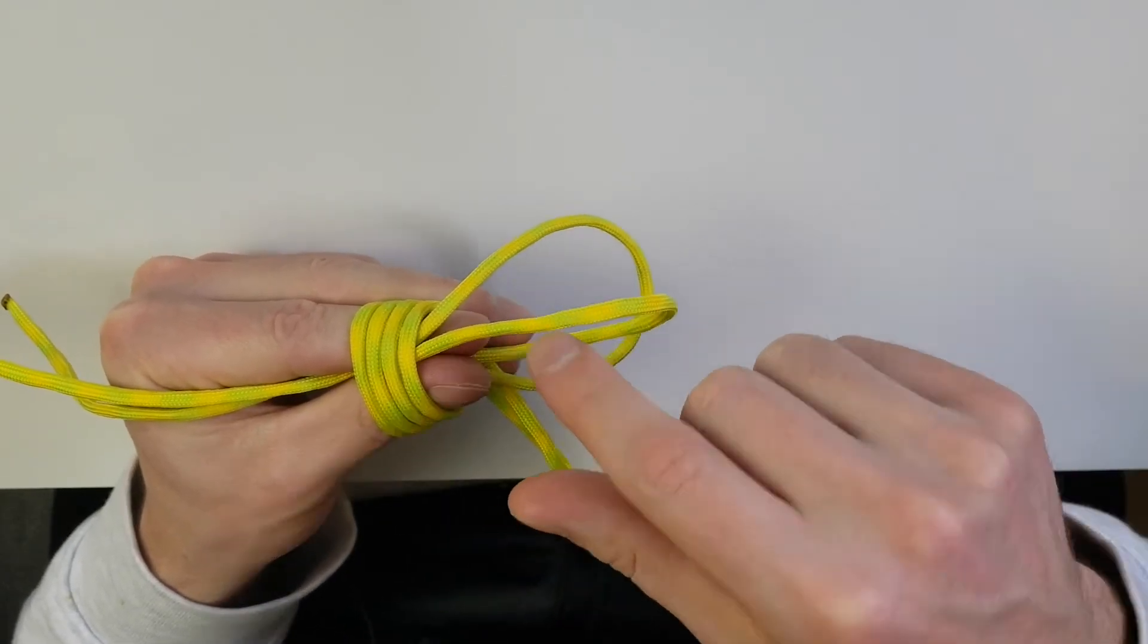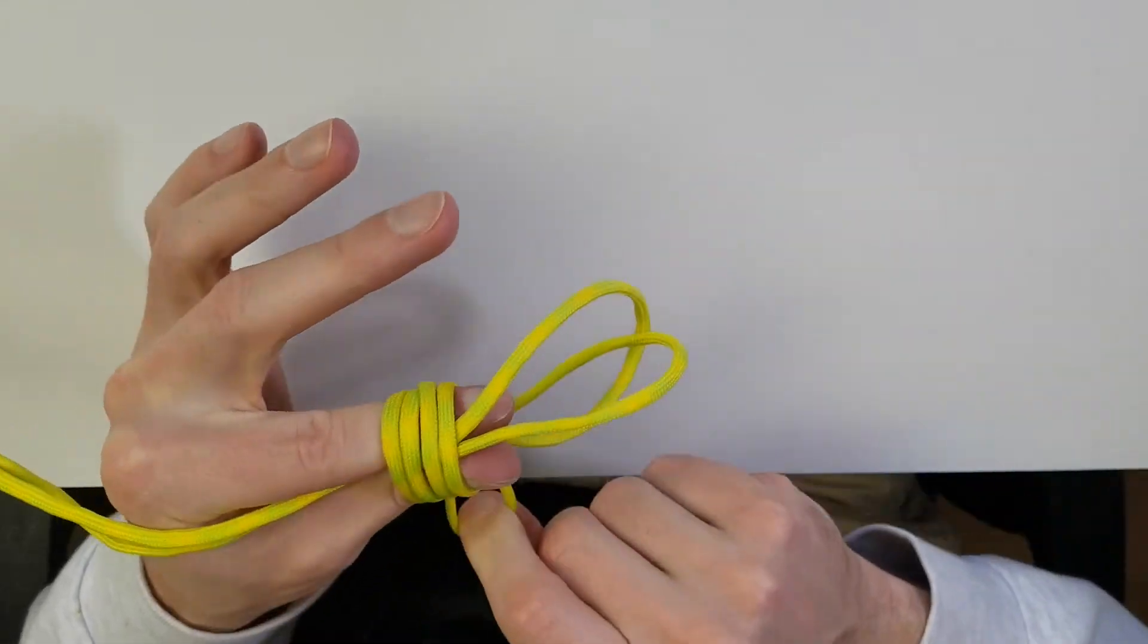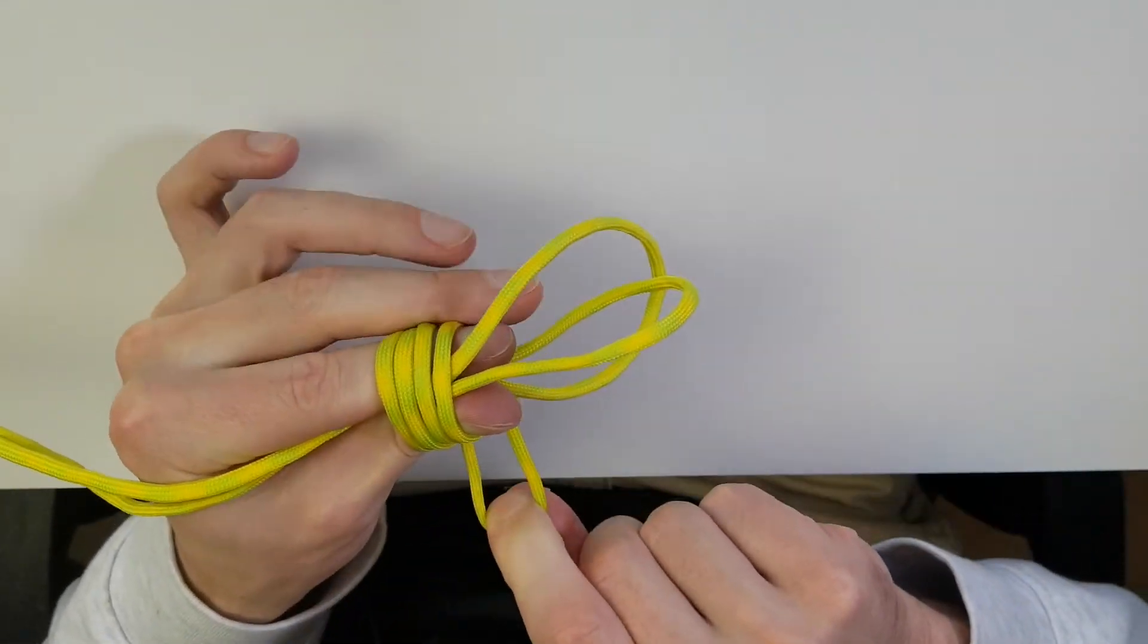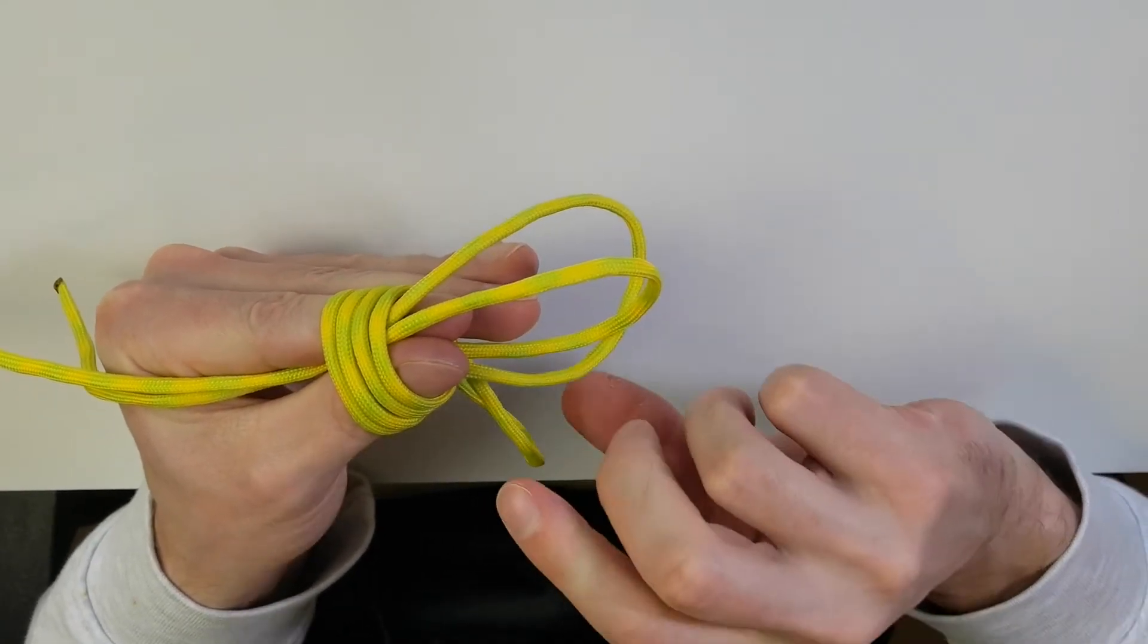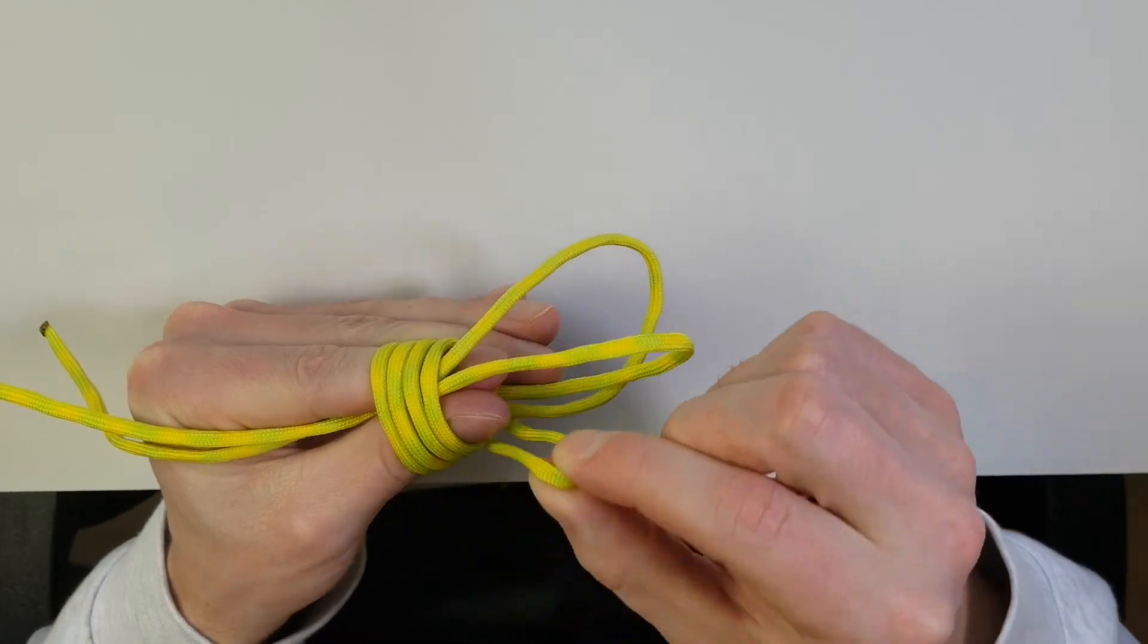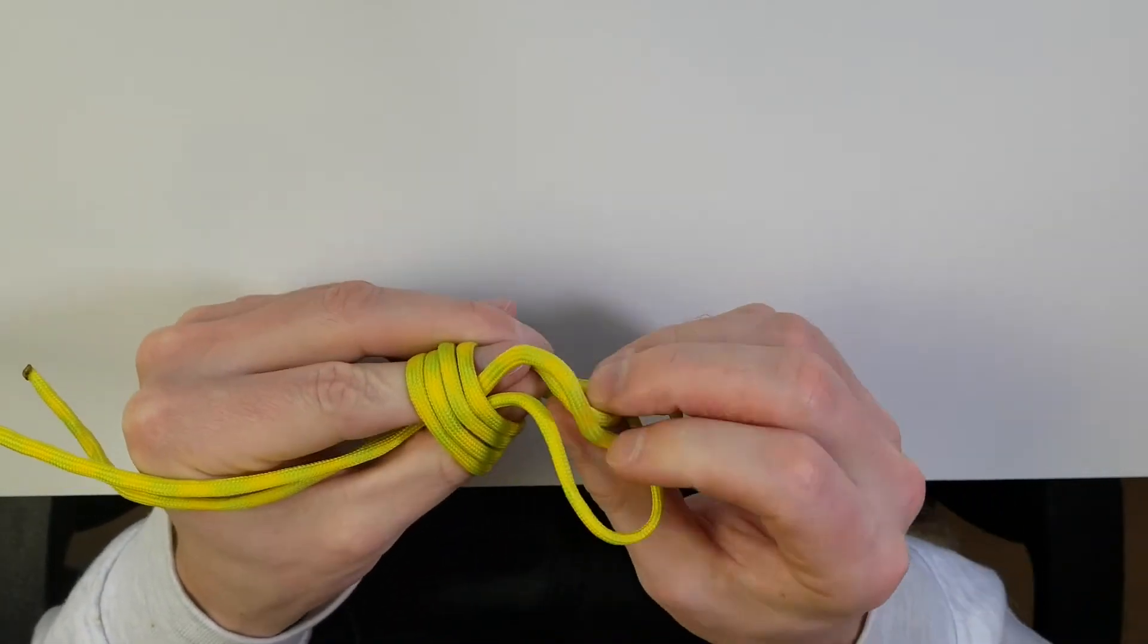And then what we're going to have is a loop, we're going to have our wraps, and this loop that we were just wrapping around with. So we are wrapping around with this one. You're going to take this and feed it between the two loops here. All we're going to do is pass it through, just like that.